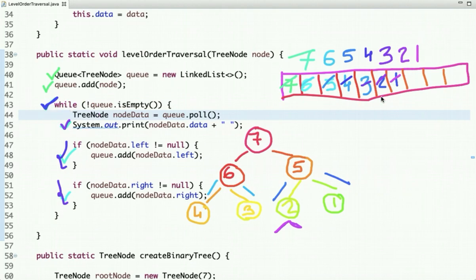After the last node, so the queue is empty. So we came out of this while loop and this is the result of the level order traversal. So this is how we can do the level order traversal using queue data structure.